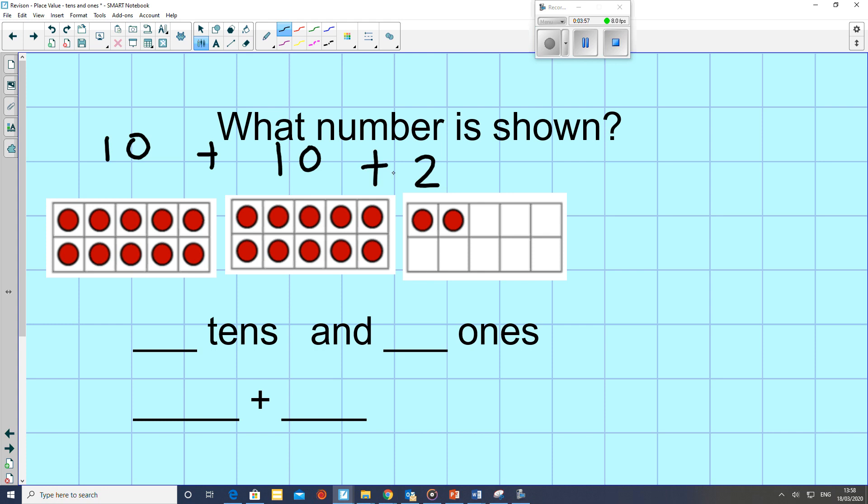So together, we need to add them. There are 2 tens, which is 20, and there are 2 ones. 20 plus 2 equals, if we put them together, 22.